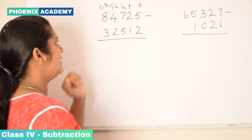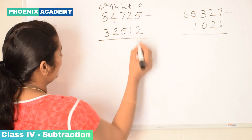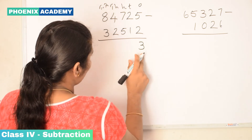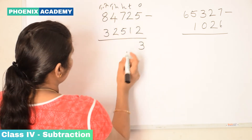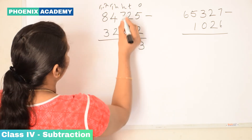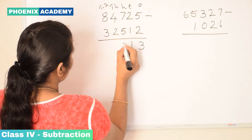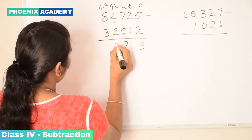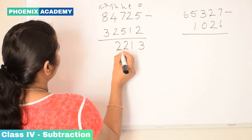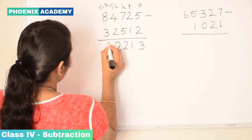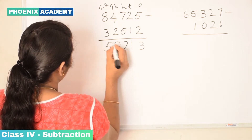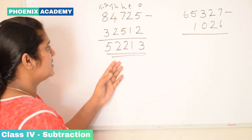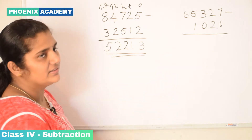Let's subtract from ones. 5 minus 2 is 3 — we write in the ones place. 2 minus 1 is 1. 7 minus 5 is 2. 4 minus 2 is 2. 8 minus 3 is 5. So the difference is 52,213.